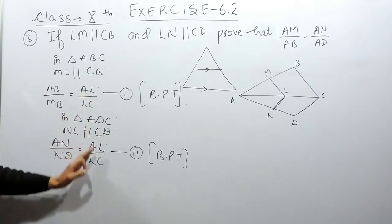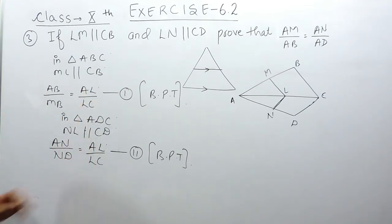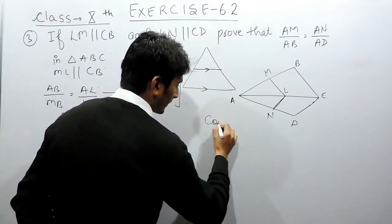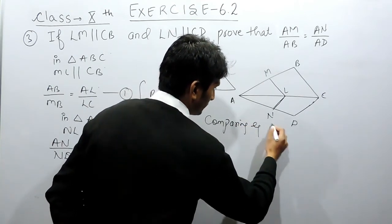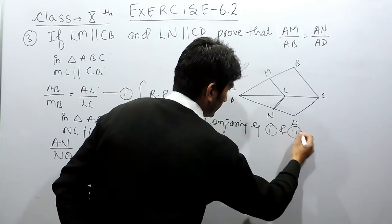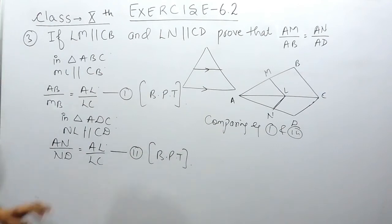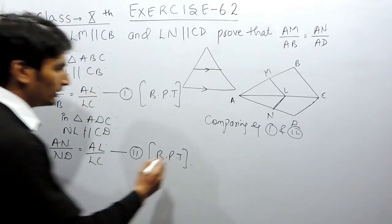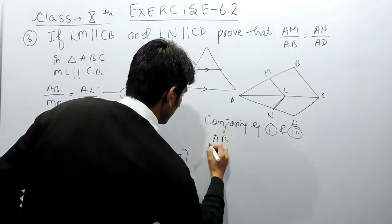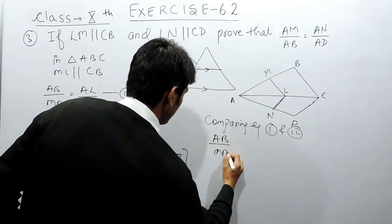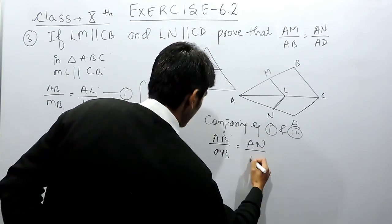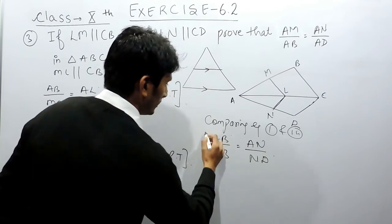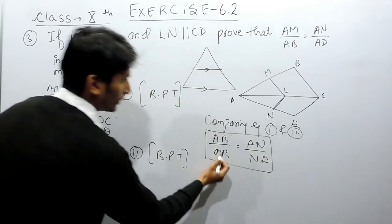We now have two equations, and in both equations the right-hand sides are equal — both equal AL upon LC. Comparing equation one and equation two, we conclude that if the right-hand sides are equal, the left-hand sides must also be equal. Therefore, AM upon MB = AN upon ND, which is what we had to prove.